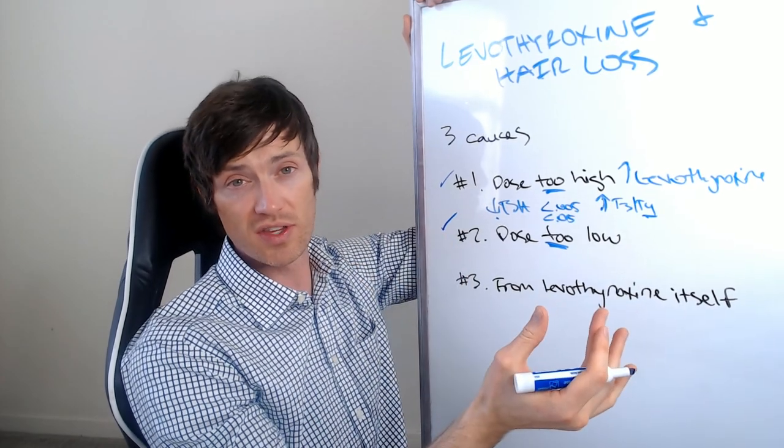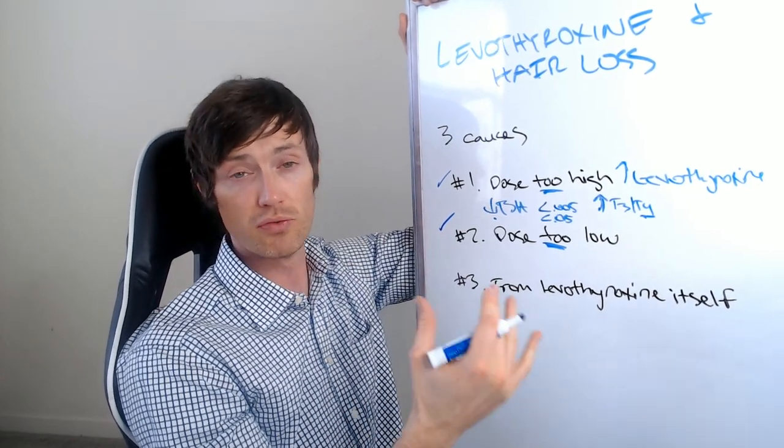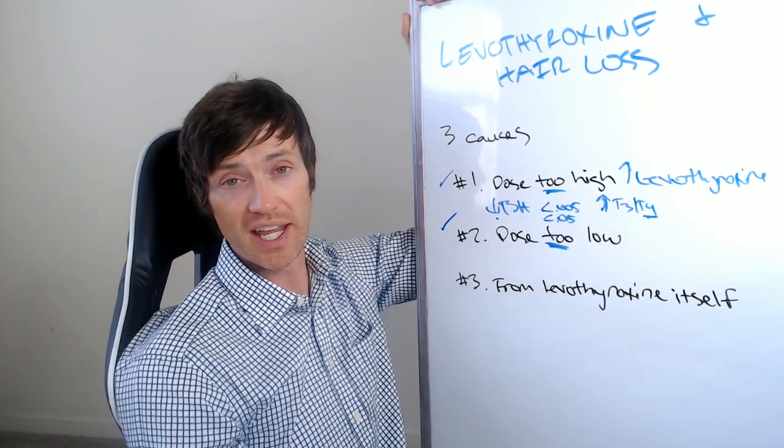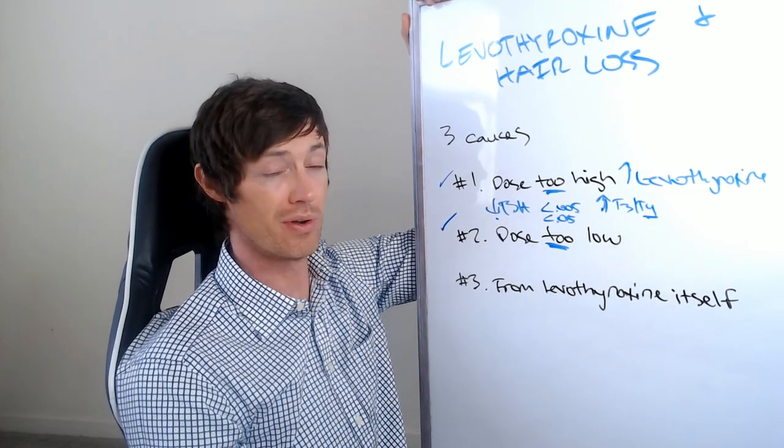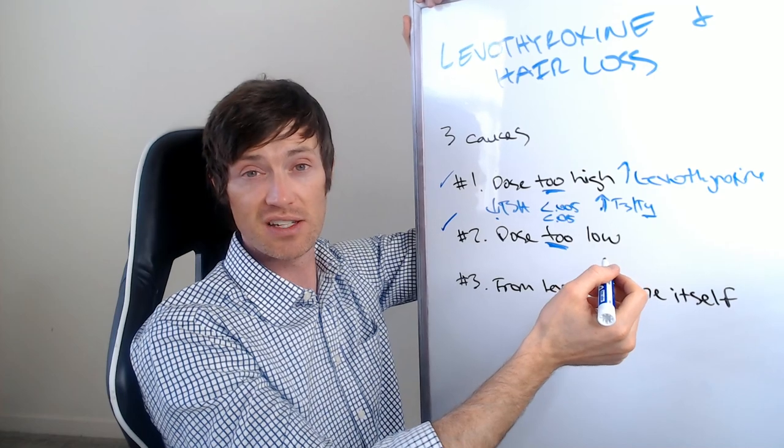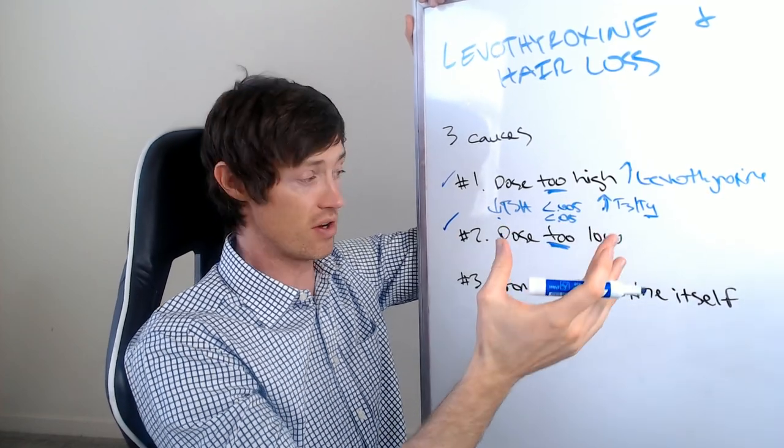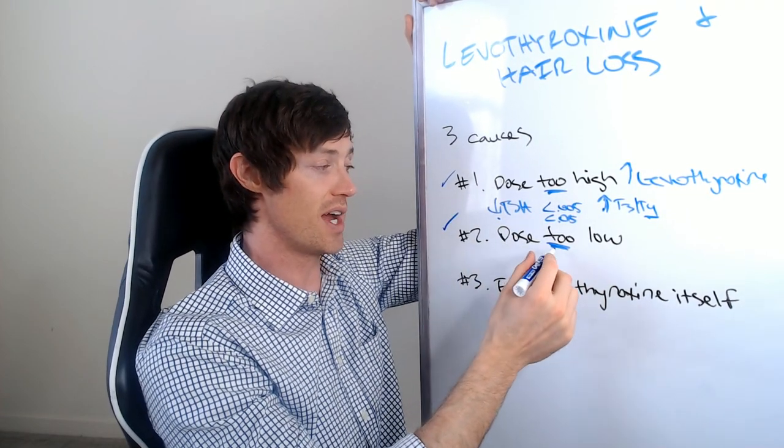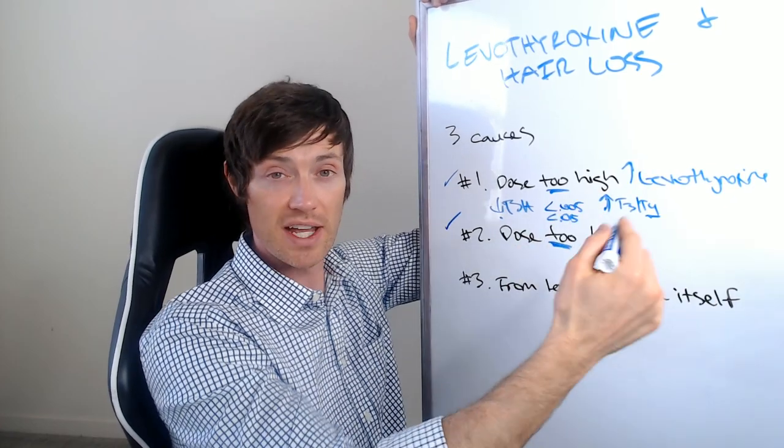Doctors would prefer to give you less than too much. They almost always err on the side of too little when giving anyone medications in general, including thyroid hormone. And the reason is simple: if they give you a dose too small, the risk of side effects related to that medication are fewer. So they almost always err on the side of giving you too little as opposed to too much.